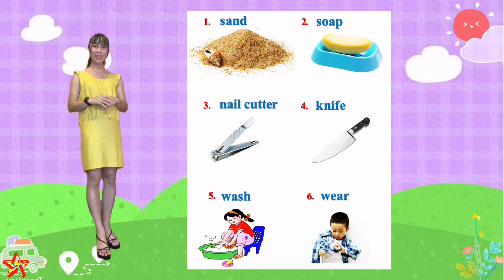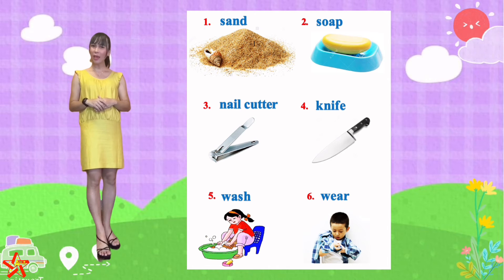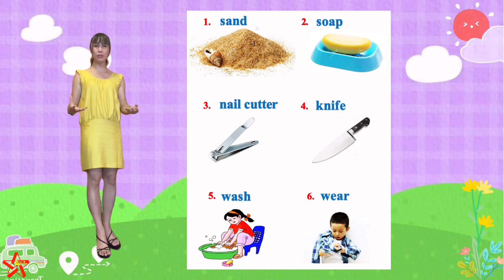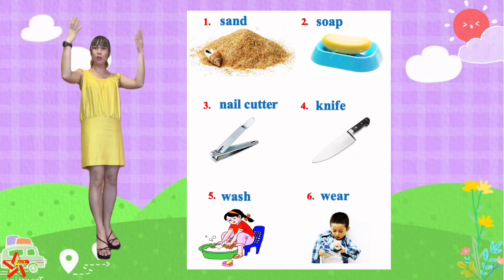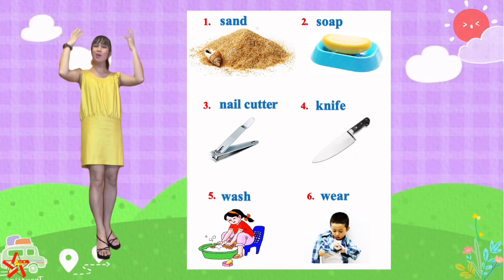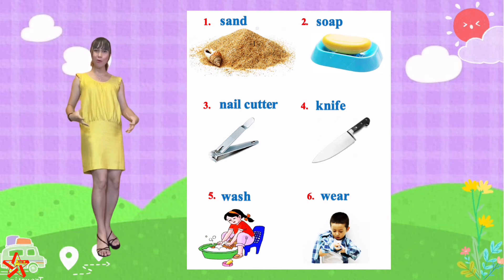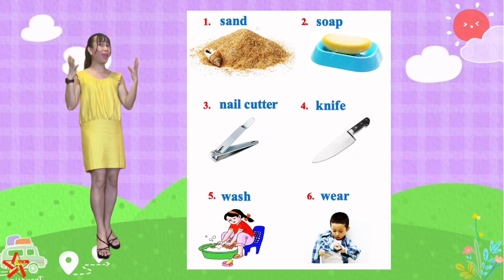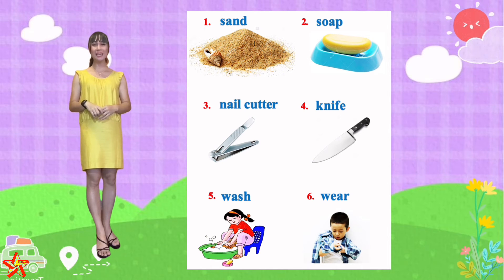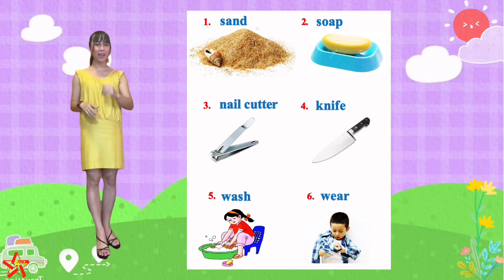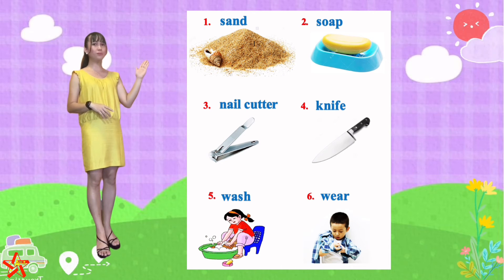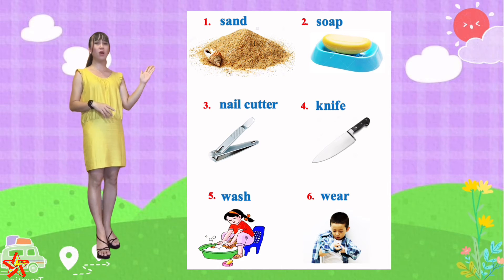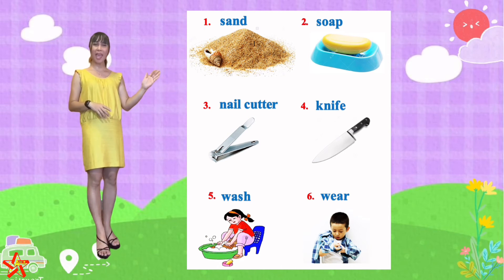And number 6 — when you have clean clothes and you finish the shower, you put your clothes on. So you wear your clothes. It's wear. W-E-A-R. Let Teacher Isa read all these words. We have sand, soap, nail cutter, knife, wash, and wear.